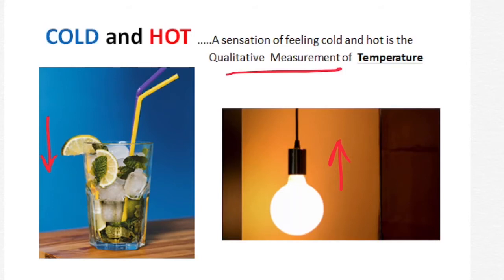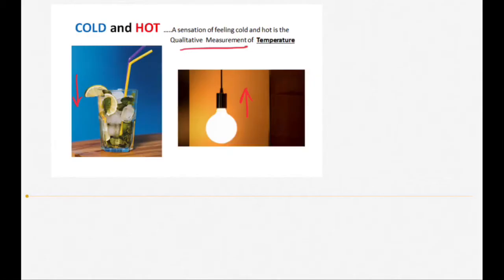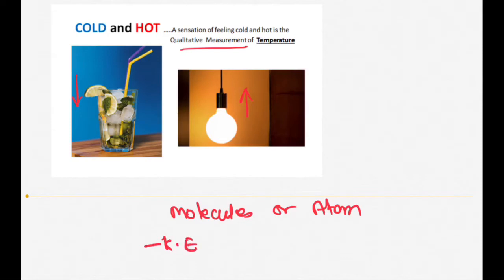The internal energy of the substance depends on the energy of its particles — particles like molecules or atoms. Now these particles possess energy in the form of kinetic energy and potential energy. The kinetic energy is due to their random motion, while the potential energy is due to their atomic or molecular structure and the attraction forces among those atoms or molecules.